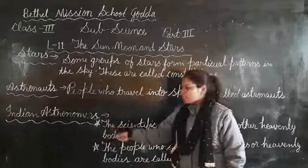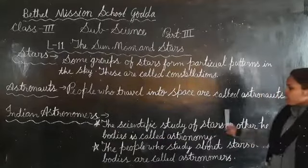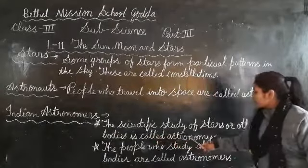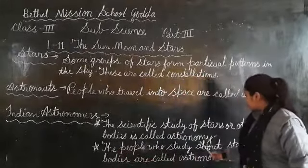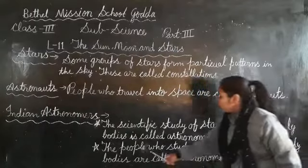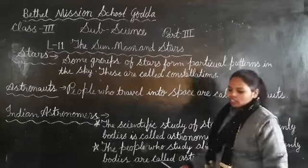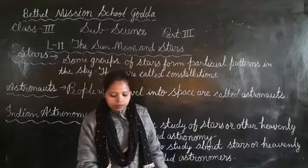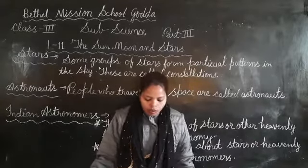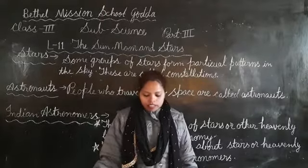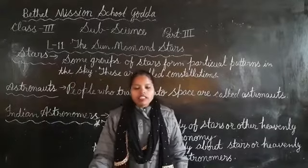The scientific study of stars and other heavenly bodies is called astronomy. The people who study stars and heavenly bodies are called astronomers. Aryabhatta, Varahamihira, and Bhaskara are some famous ancient Indian astronomers.